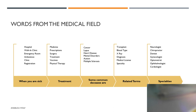Sometimes it goes as far as having surgery or general treatment. Sometimes you just need a vaccine or physical therapy. Some of the most common diseases mentioned are cancer, lupus, heart disease, mental disorders, autism, and multiple sclerosis. Related terms in the medical field include transplant, blood type, x-ray, and diagnosis.